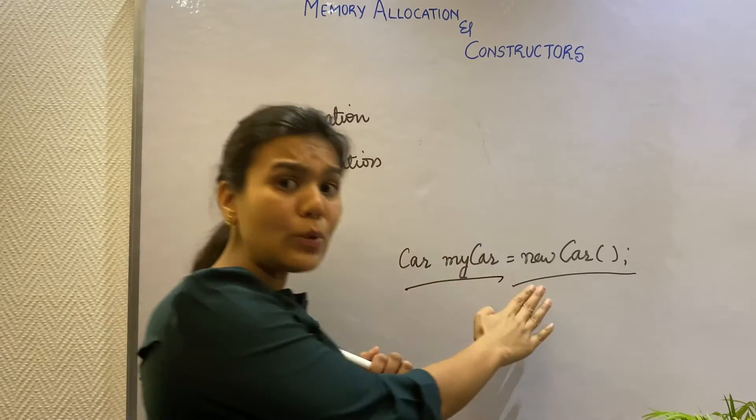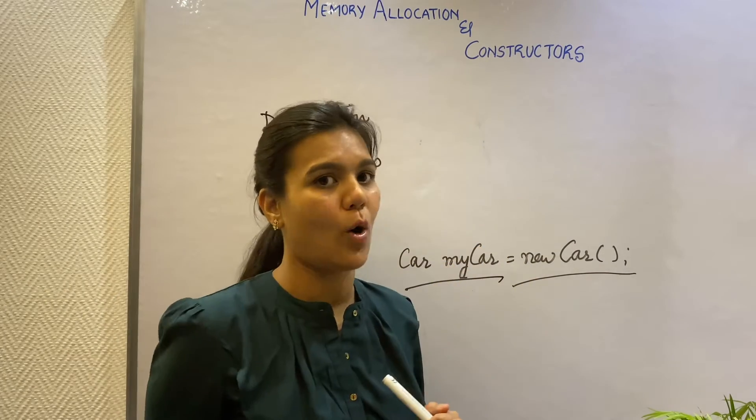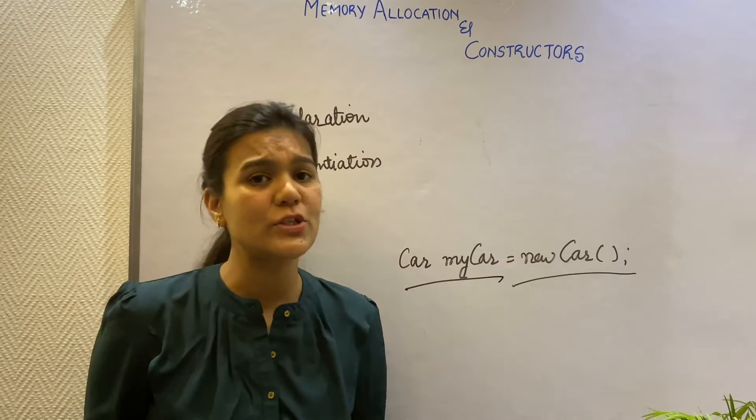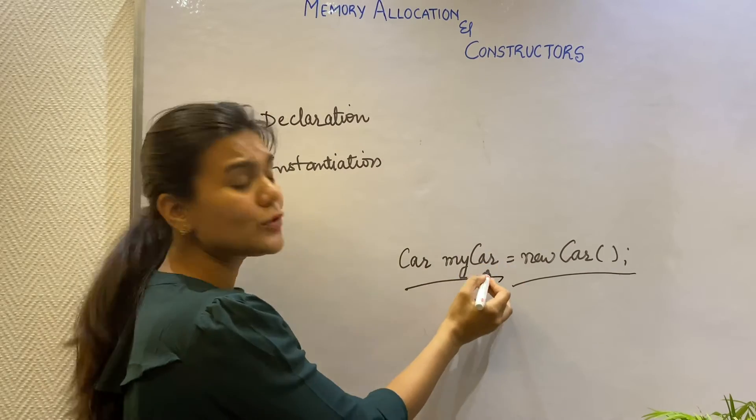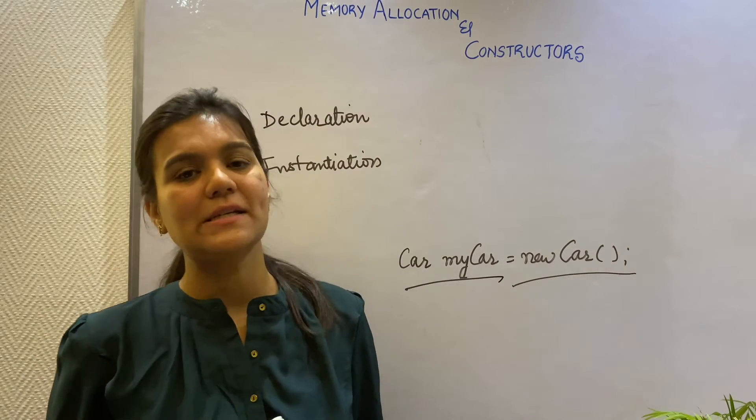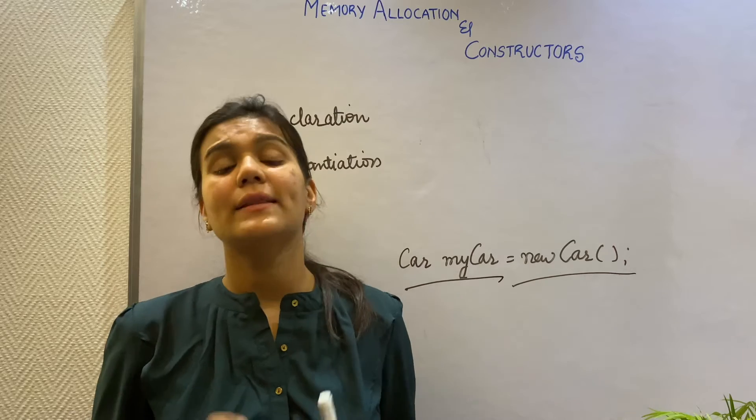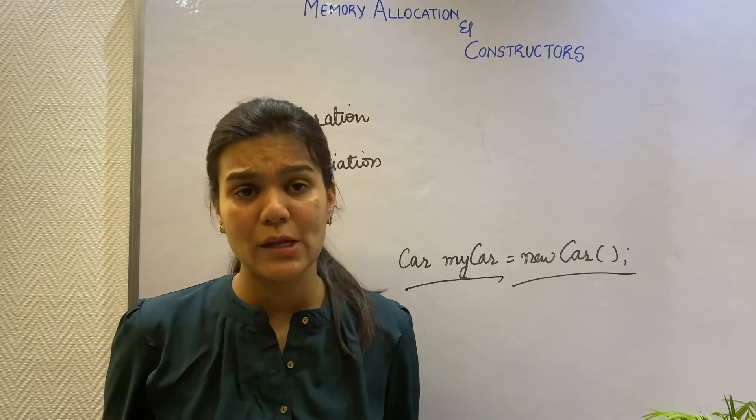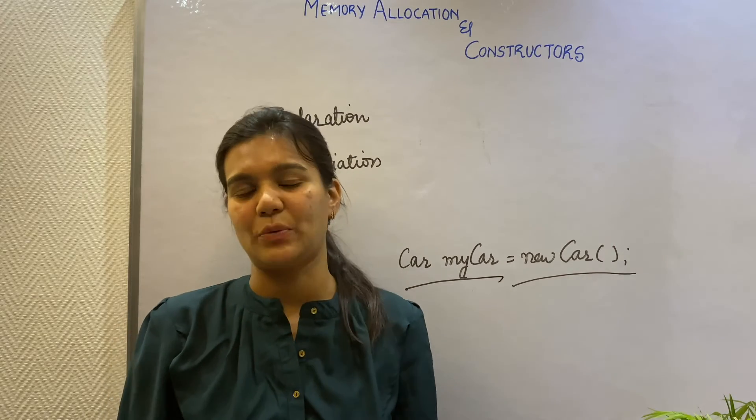Instantiation. The new keyword actually creates the object and the memory is allocated to this object for which the reference is assigned to the my car reference variable. There's one thing that is important here and need to be understood. That the new keyword allocates memory only at runtime. So the memory gets allocated when the program is executing.